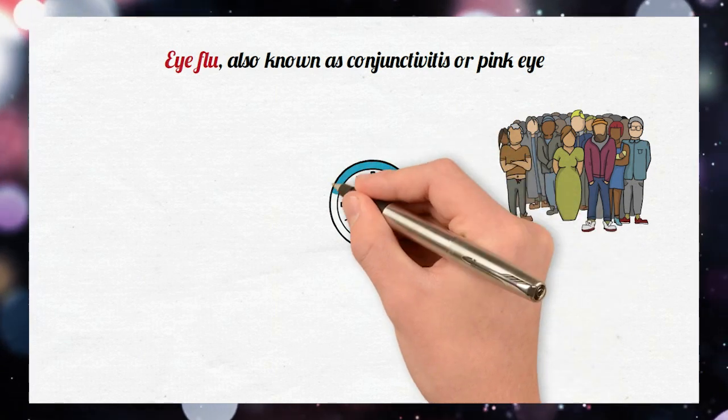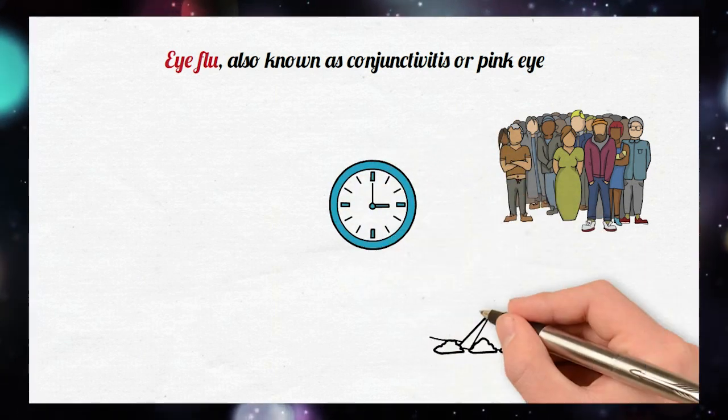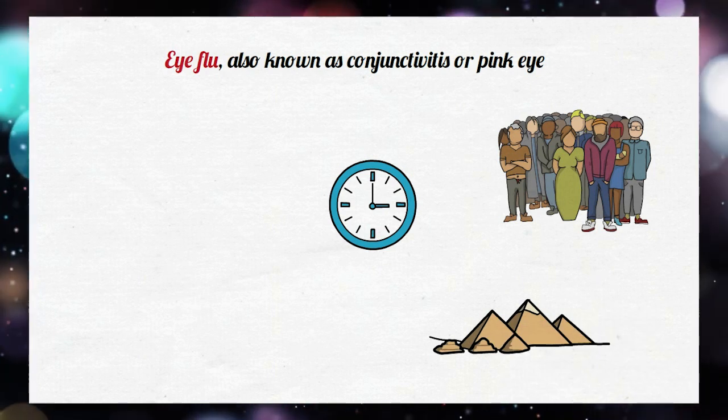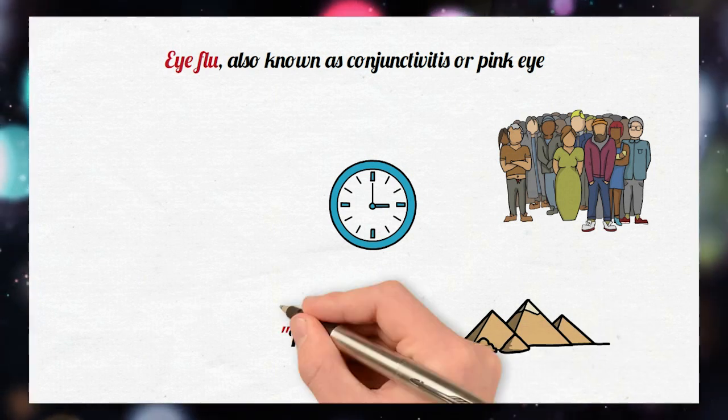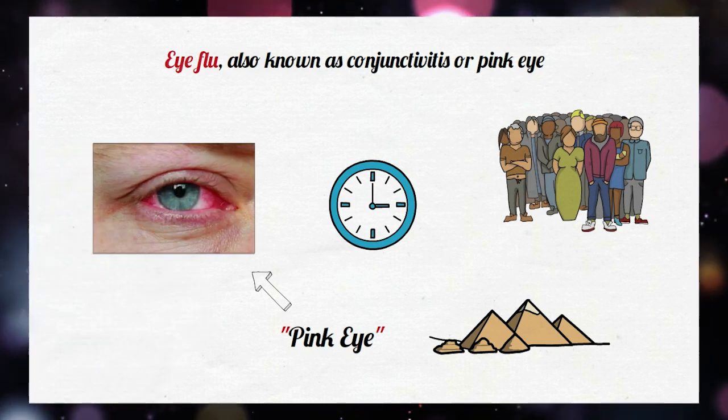It has been around for a long time, with historical records dating back to ancient civilizations. The term pink eye comes from the pink or red color that often appears in the white part of the eye when someone has this infection.